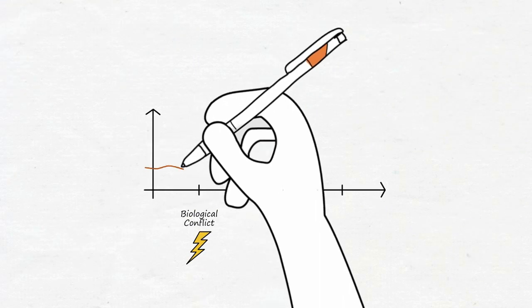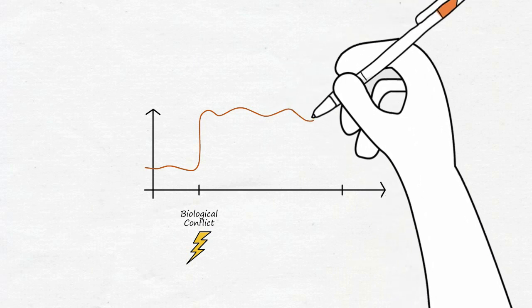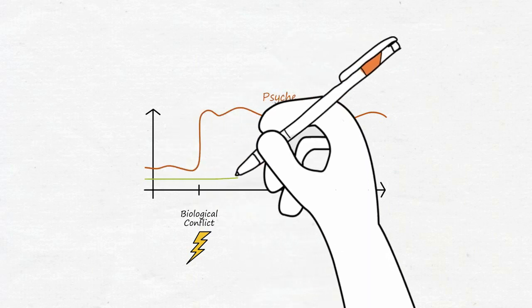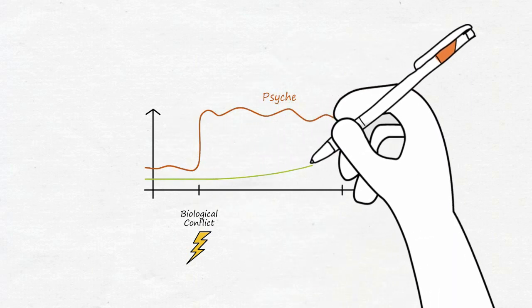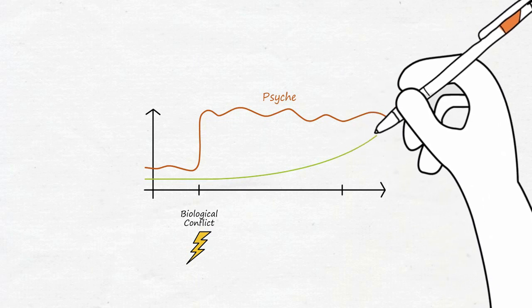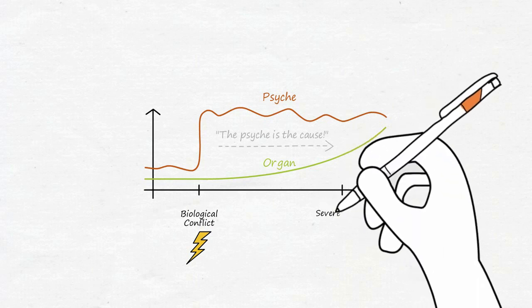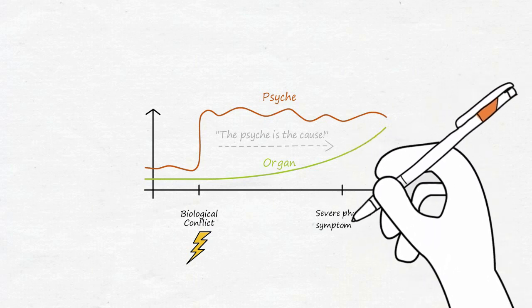At the psychic level of the SBS, timeline changes are visible immediately after the biological conflict. By contrast, at the organic level, it may take weeks or even months for the functional changes to become problematic cellular changes, which lead to increased symptoms. This time lag led to the idea of the psyche as the cause of disease, as one can often observe how a person with an altered mental state eventually develops severe physical symptoms.